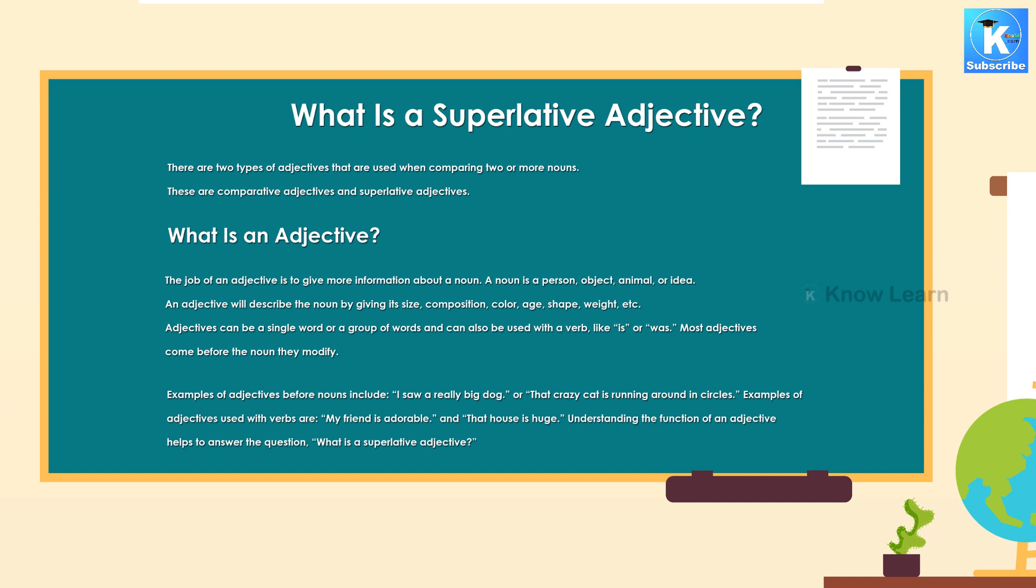Adjectives can be a single word or a group of words and can also be used with a verb, like is or was. Most adjectives come before the noun they modify.